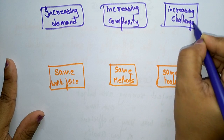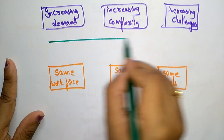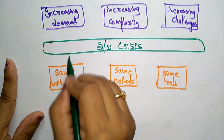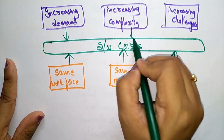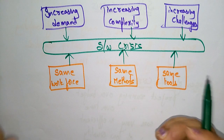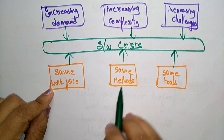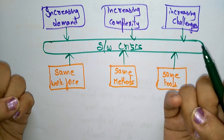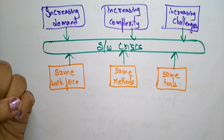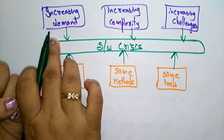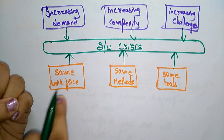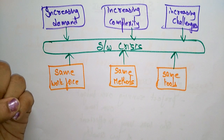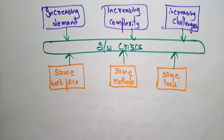Increasing challenges and increasing competition — that leads to software crisis. If you use the same workforce, same methods, and same tools at the time when demand is increasing, complexity of systems is increasing, and challenges are increasing, that leads to software crisis. If something is changing, you have to add new configurations to your software.